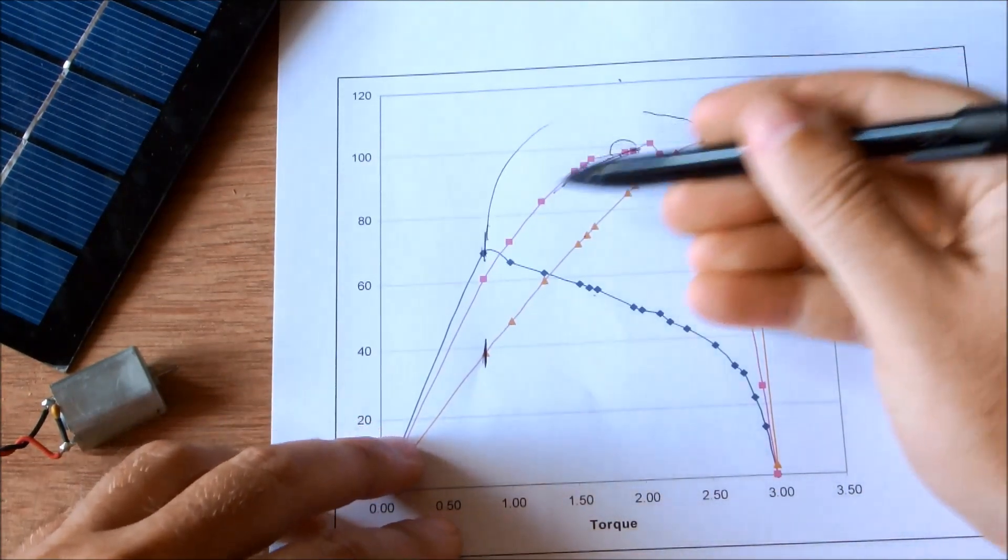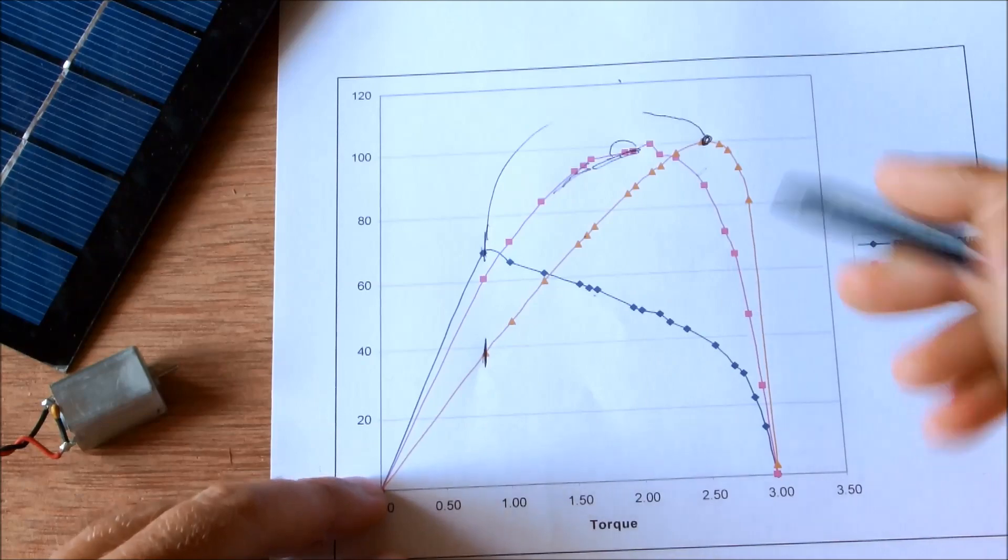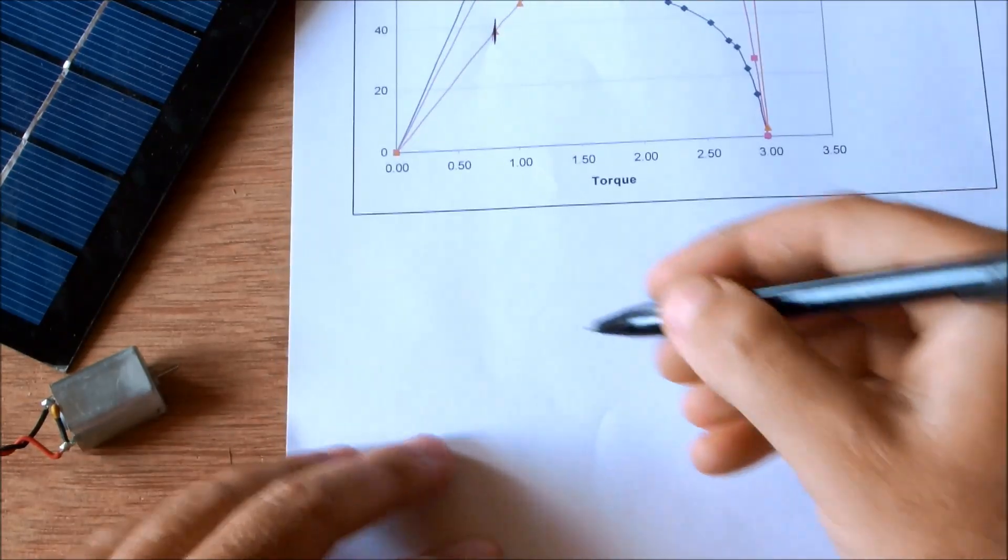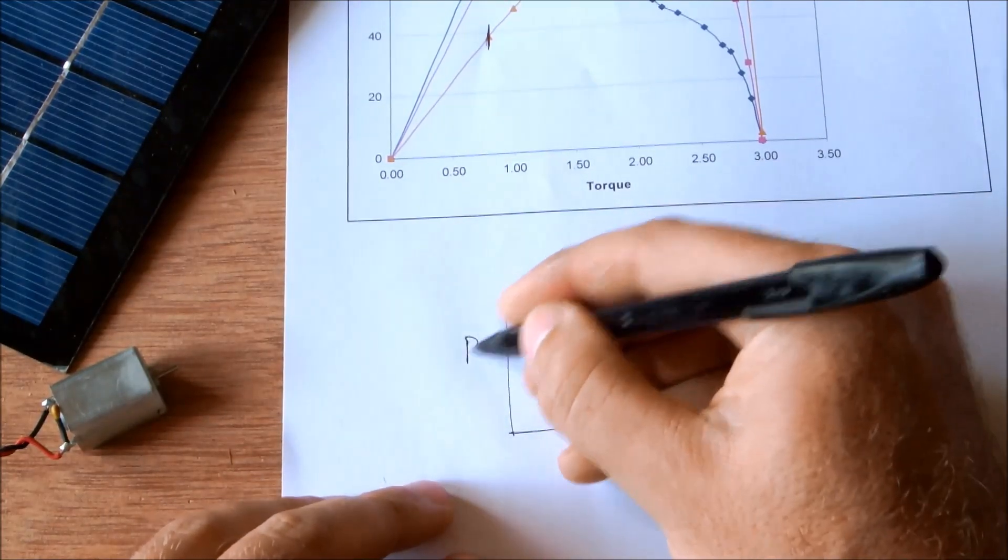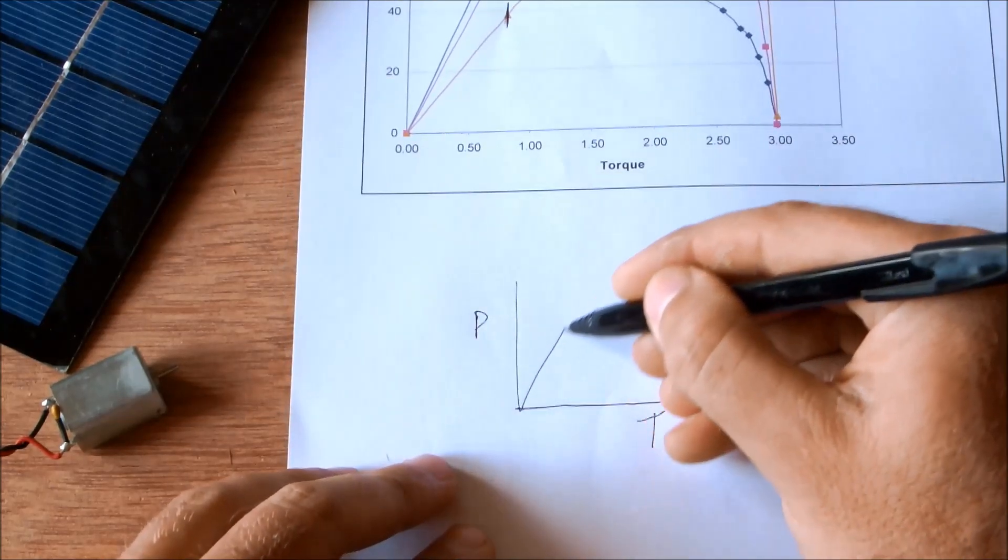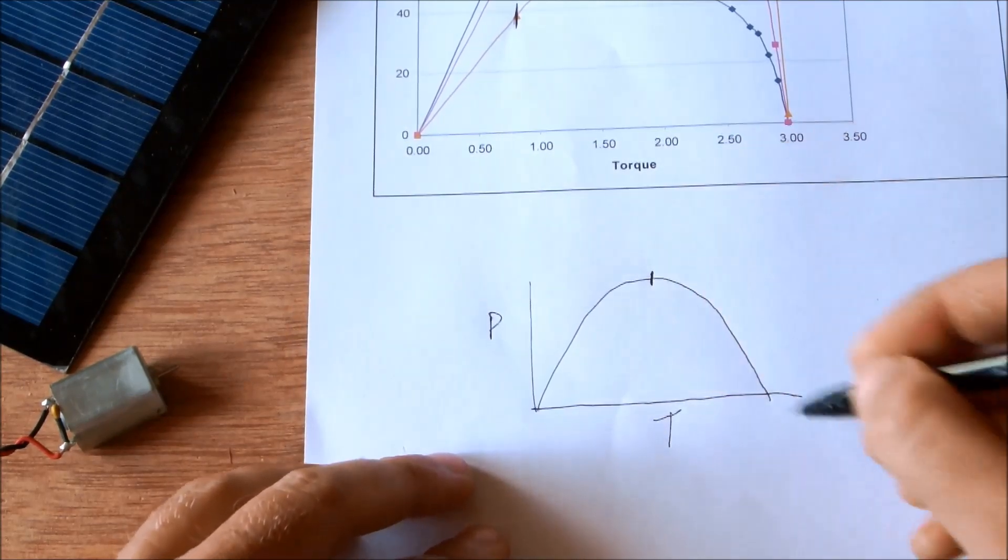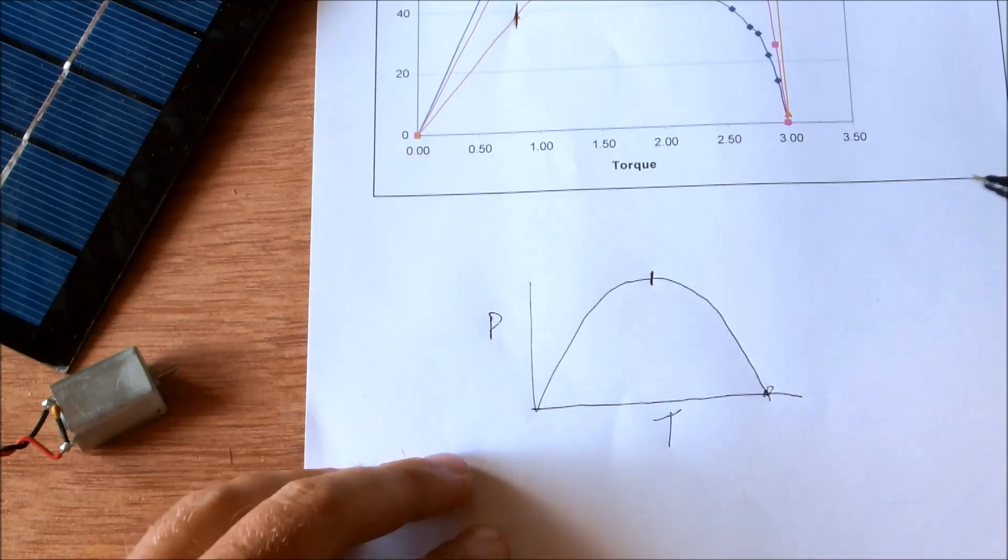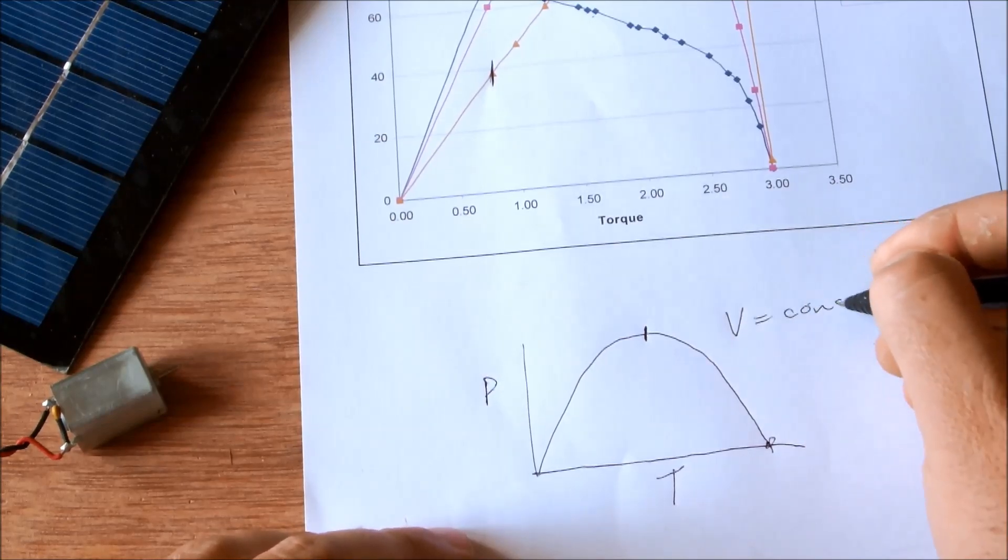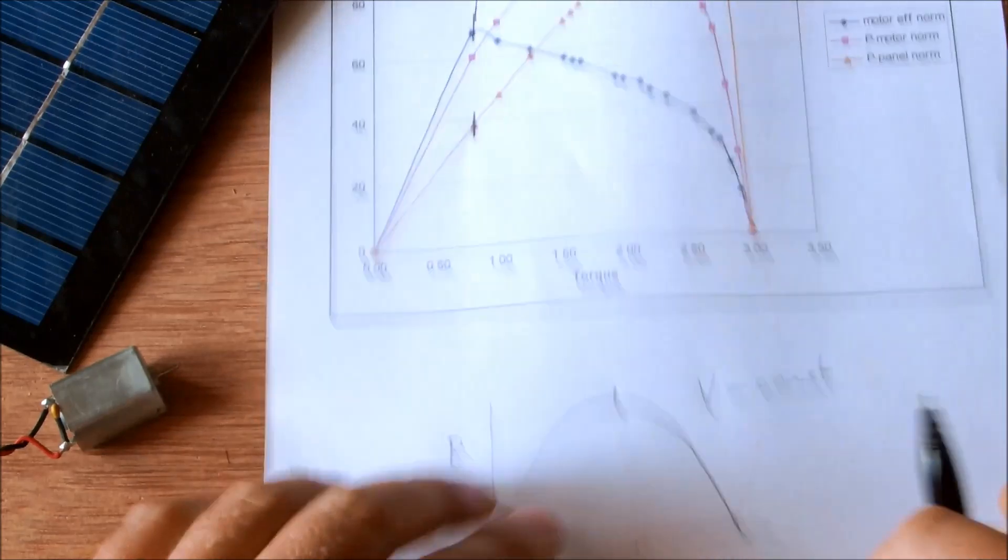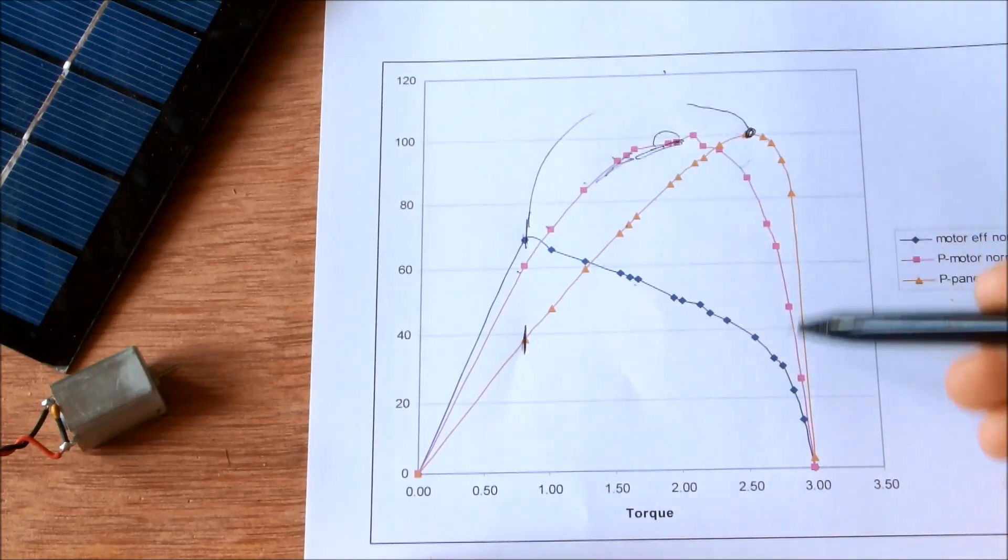Now this pink curve, which is power, and I have got torque on the x-axis, already represents the basic shape that you expect from most spec sheets as supplied by some DC motors, where you have power and torque and you get a nice symmetric curve with maximum power pretty much at 50% of maximum torque. The difference between these two is that this is at a constant voltage, whereas the graph that we generated over here happened at different voltages for each point.